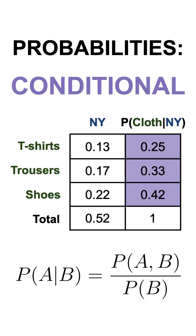Finally, the conditional probability shows us how probable it is for an event to occur given that another event has already occurred. For instance, in our example, a conditional probability would be the chance of selling a pair of trousers to a user given that we already know that this user is from New York.